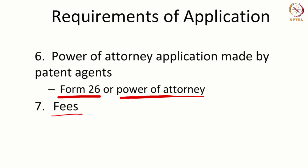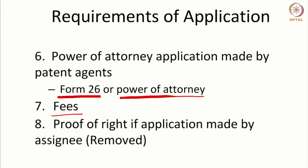The required fees have to be paid and the proof of right — the right to make an application — has to be given. Earlier it had to be done along with filing the application, but now that provision has been removed; you have been given time to file a proof of right even after you make the application. Proof of right means that when an inventor assigns his invention to another person, say the employer or the company where he works, the company when it files a patent application has to show proof of right — how the applicant got the invention — and that has to be demonstrated with documents.